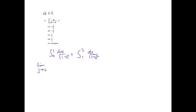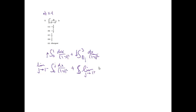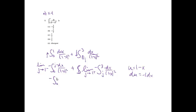Since we can't actually approach 1, we use limits. I'll use j approaching 1 from the left: limit as j approaches 1 from the left of the integral from 0 to j of dx over 1 minus x squared, plus the limit as j approaches 1 from the right of the integral from j to 3 of dx over 1 minus x squared. Using u-substitution with u equals 1 minus x, du equals negative dx, giving negative u to the negative 2 du.